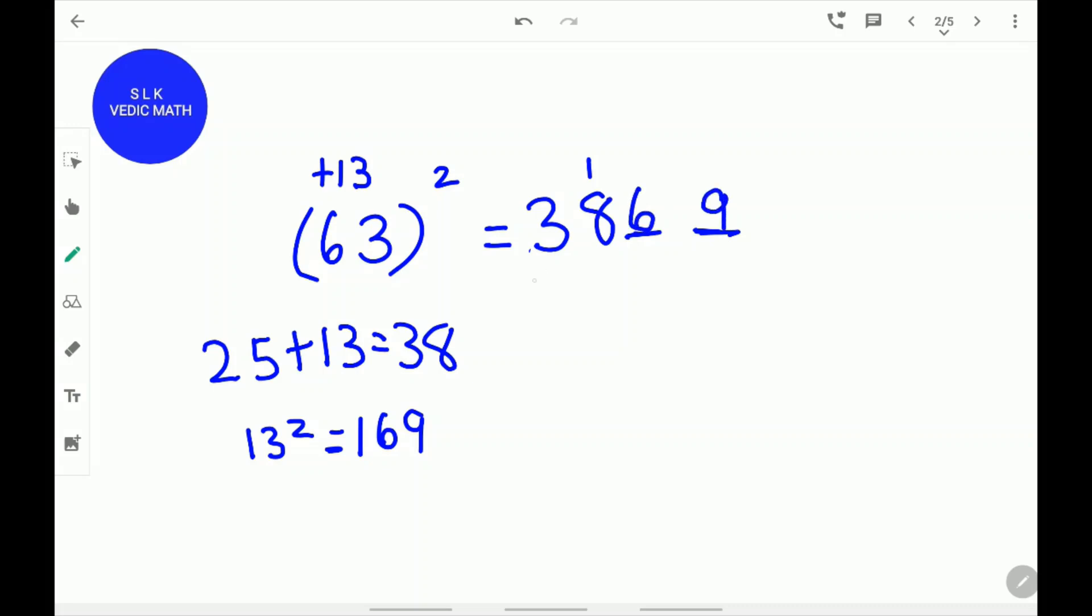Now, add them up. 38 plus 1, 9. 69. So, the answer for 63 square is 3969.